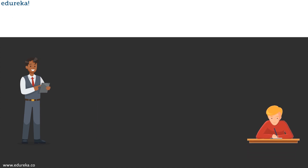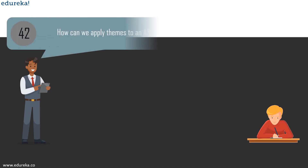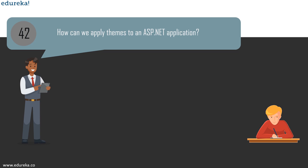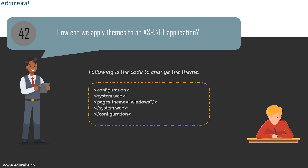Question 42: how do we apply themes to an ASP.NET application? The code to change the theme: open the configuration, go to system.web, write pages and mention the theme, then close system.web and configuration. This is a simple configuration-based approach to applying themes to an ASP.NET application.